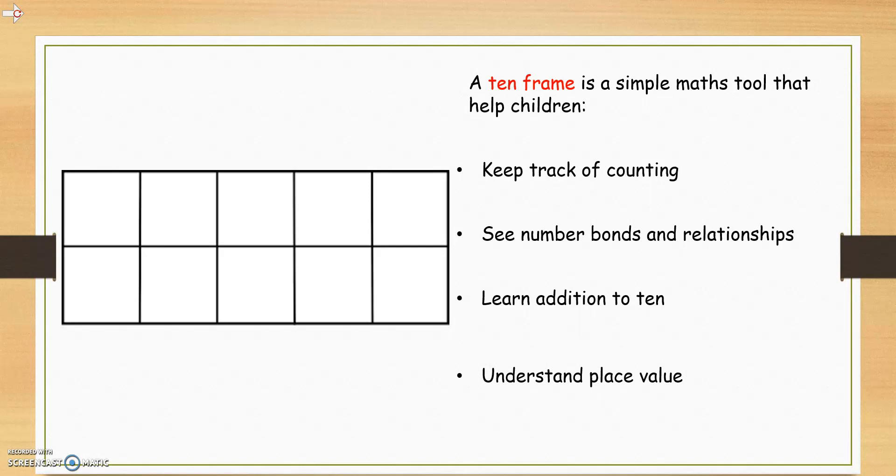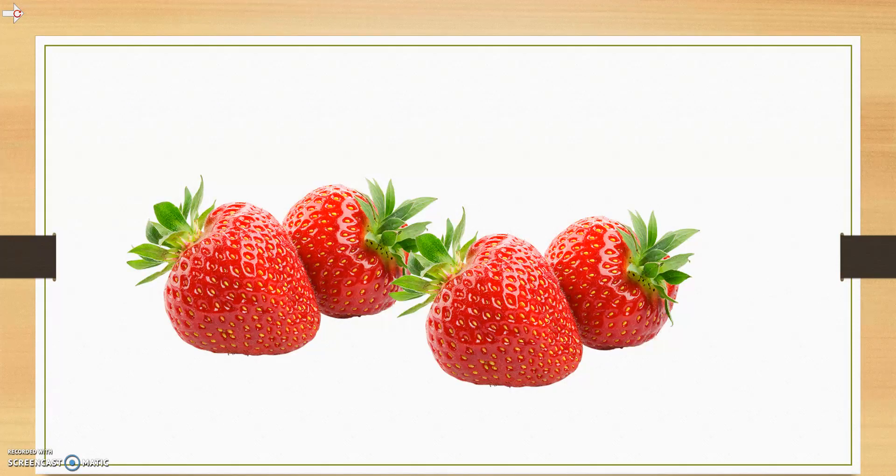This week in maths the children have been using their 10 frames to keep track of their counting and to begin to see the number bonds and relationships between different numbers. Now, have a look at the picture below. Can you see the strawberries? Can you tell me how many strawberries you can see? Pause this video for a moment and see if you can count them.